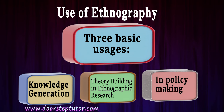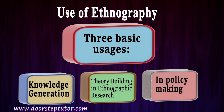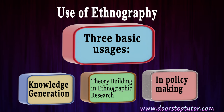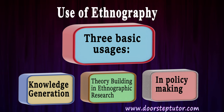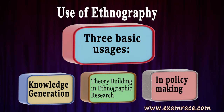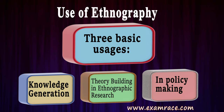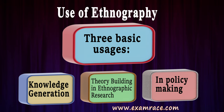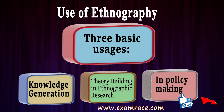Knowledge generation is basically an attempt to understand the society in a systematic manner; it creates a view for future issues and provides a way to resolve them. Theory building involves a set of interrelated propositions about human affairs and the social world that explains their regularities and properties — ethnography is very helpful here as it provides all-round data of the society. Policy making reinforces the growth of applied anthropology as it increases the chances of policymakers using ethnographic data in their policy decisions.